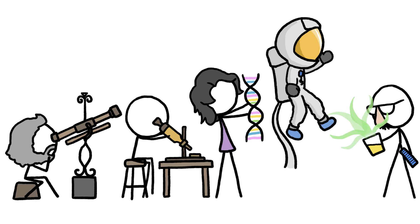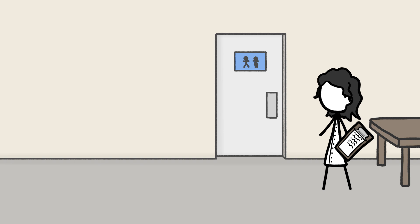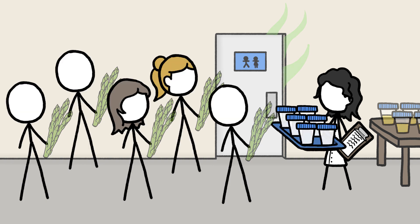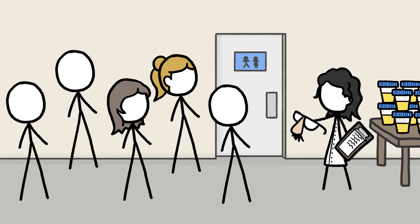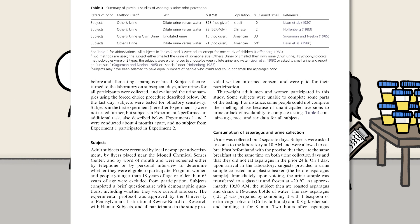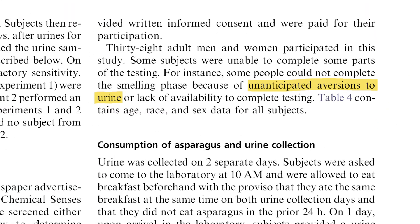Pee sniffing has helped scientists figure out the basics, though. In a 2010 study, researchers collected pee from people both after they ate asparagus and after they ate bread, then invited the urinators back to sniff everyone's creations. Some people declined to return, perhaps because of what the researchers called an unanticipated aversion to urine.